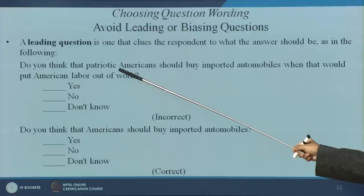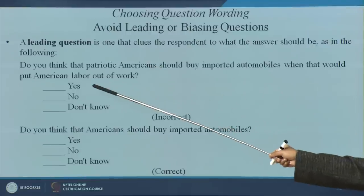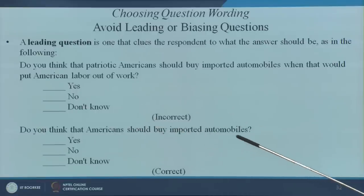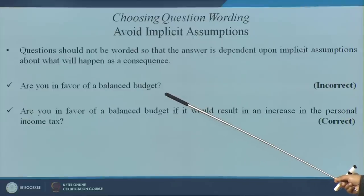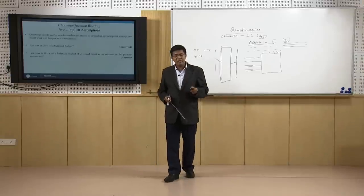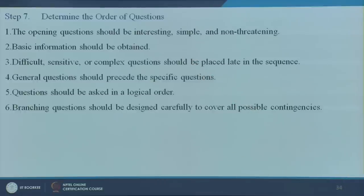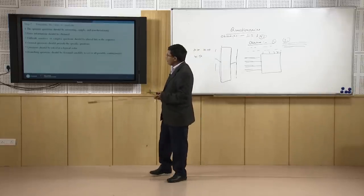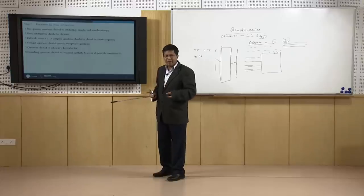Avoid leading questions. For example, 'Patriotic Americans should not buy imported automobiles — do you think patriotic Americans should buy imported automobiles when that would put American labor at risk?' — here you have already given your bias. Instead, simply ask: 'Do you think Americans should buy imported automobiles?' Also avoid implicit assumptions: instead of 'Are you in favor of a balanced budget?', ask 'Are you in favor of a balanced budget if it would still result in an increase in personal income tax?' The order of questions is also important — hide difficult questions in between, start with easier ones.